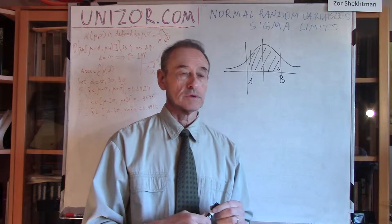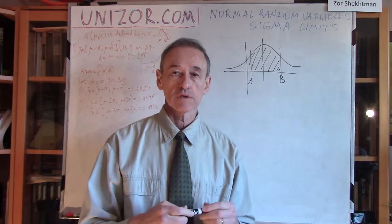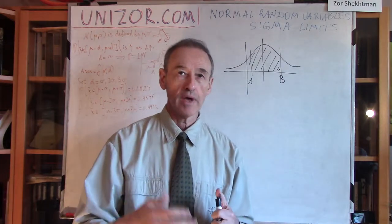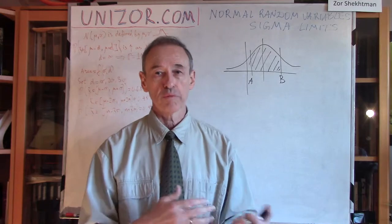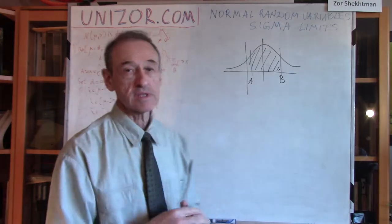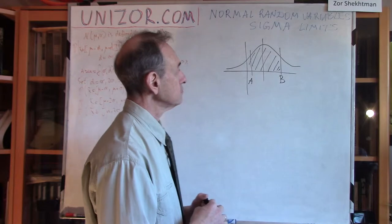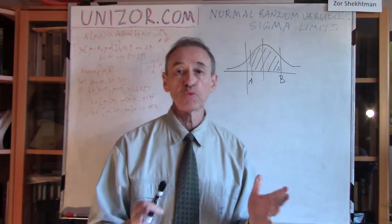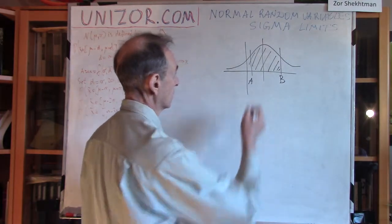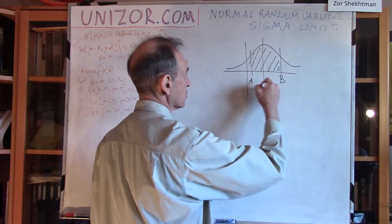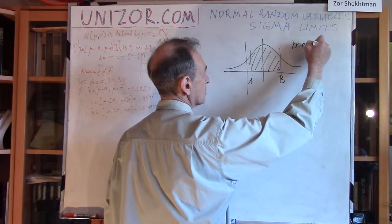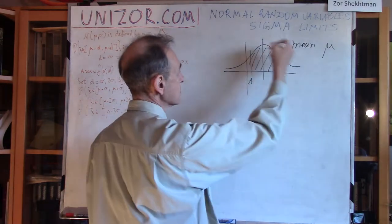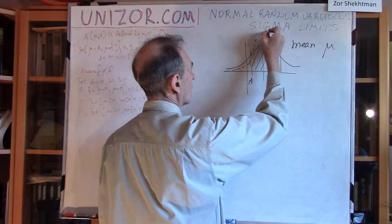It's very important to be able to evaluate the values of a normal random variable — to predict the values with certain probabilities. That's what this lecture is all about. Normal variables are defined by two parameters: the middle point, called the mean or expectation, and the steepness of the curve — because it can be wide like this, or narrow like this.